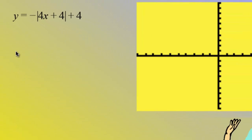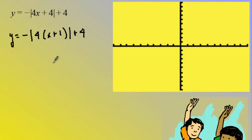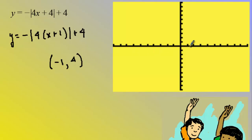Now we're going to use all that information to graph. I'm going to take the same problem: negative absolute value of four x plus one plus four. To graph these we want to locate the vertex, then use the stretch or the slope, then use the negative sign and flip it upside down. The horizontal translation is to the left one — it's the opposite of what I see — and up four, so the vertex is going to be at negative one, four.